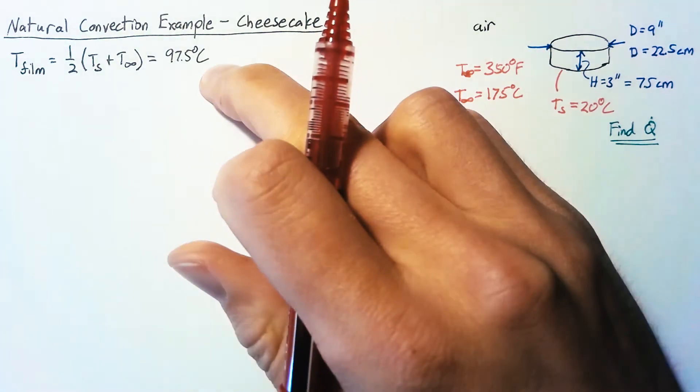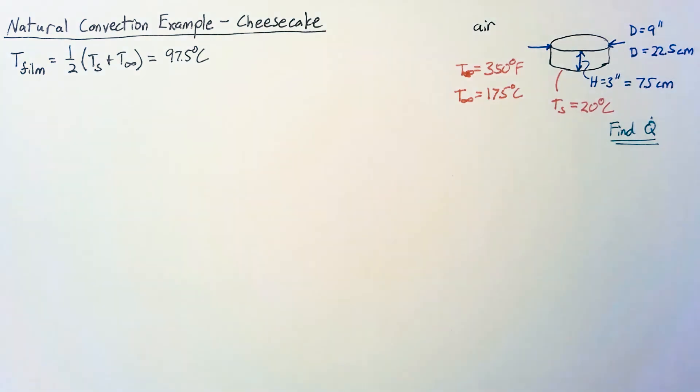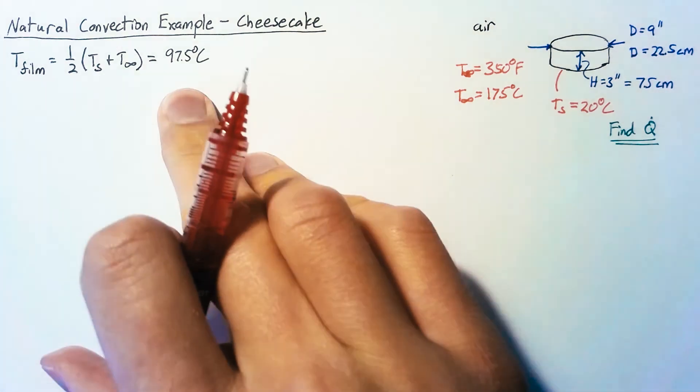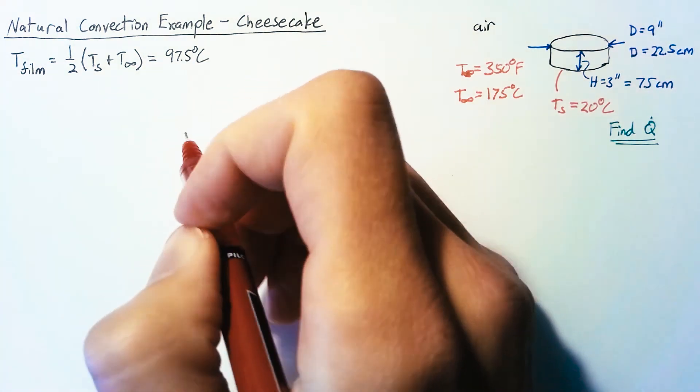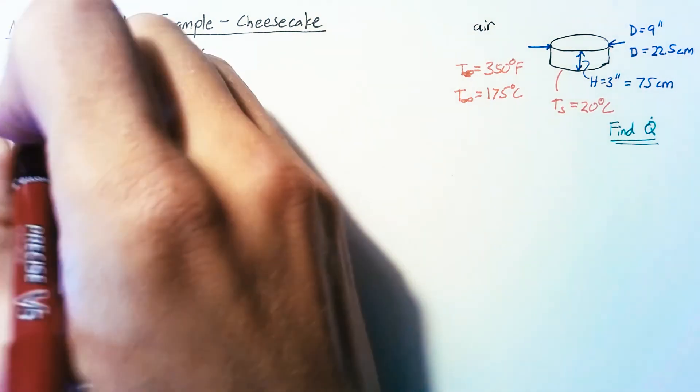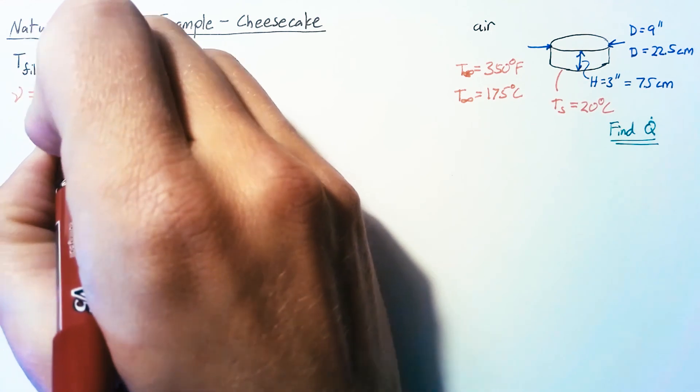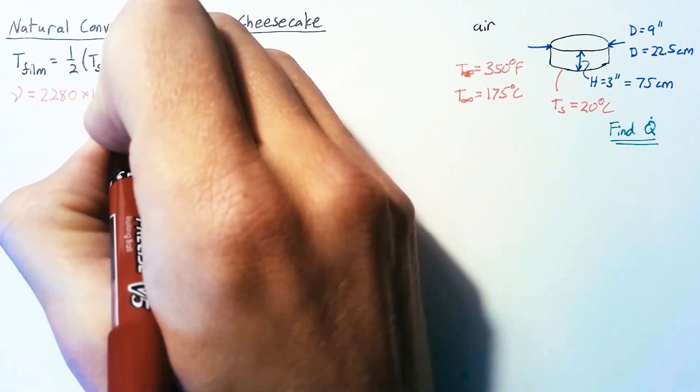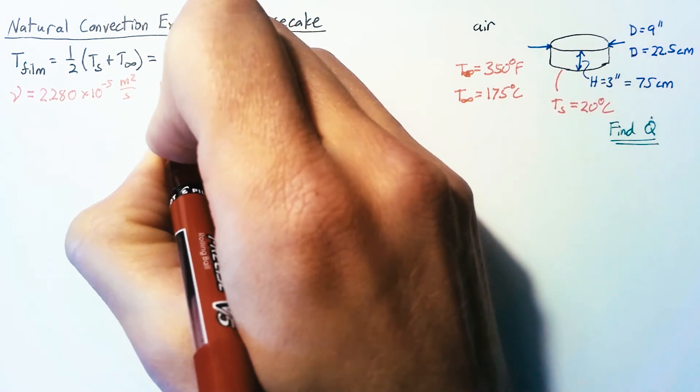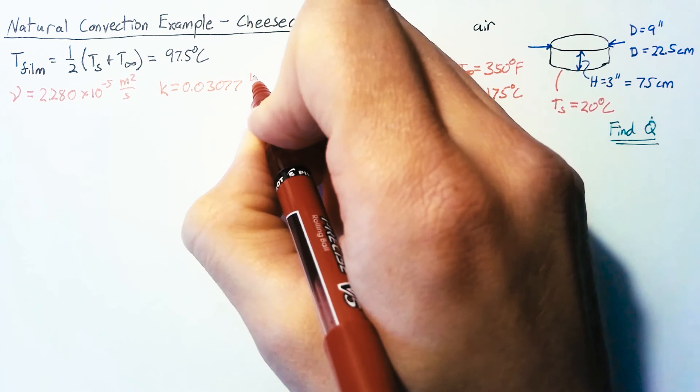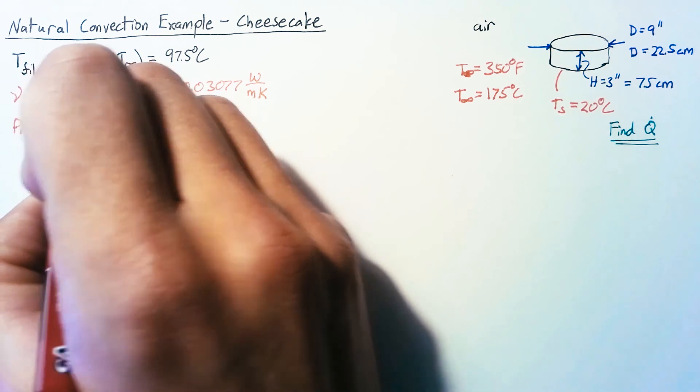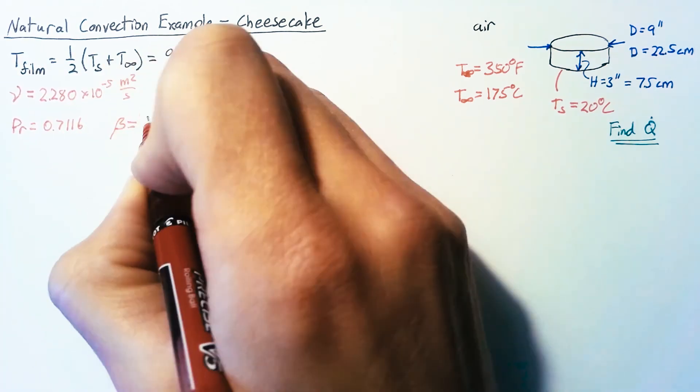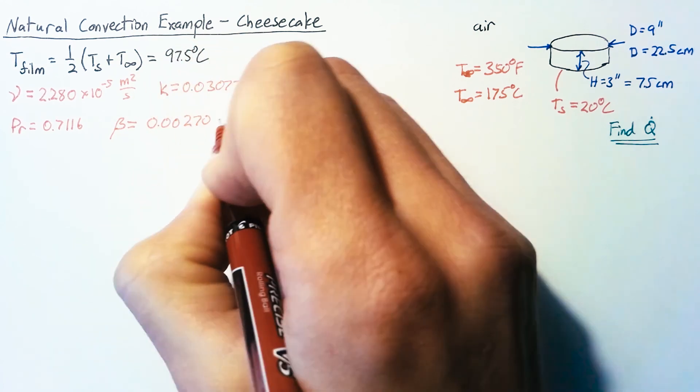Now most air tables will not have this number exactly so we need to use linear interpolation in order to find a more accurate value for 97.5. So I did linear interpolation between 90 degrees and 100 degrees and I ended up with a kinematic viscosity of 2.280 times 10 to the negative fifth meters squared per second, a thermal conductivity of 0.03077 watts per meter kelvin, a Prandtl number of 0.7116, and finally our beta value we're able to just calculate as 1 over T and that's 0.00270.